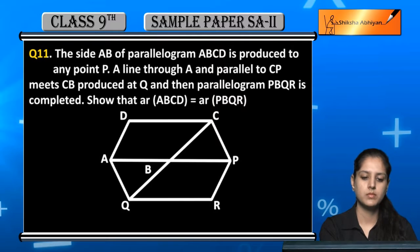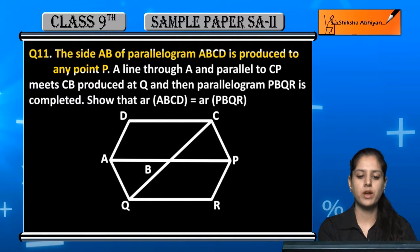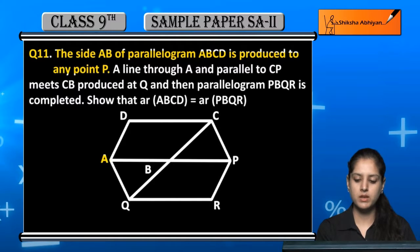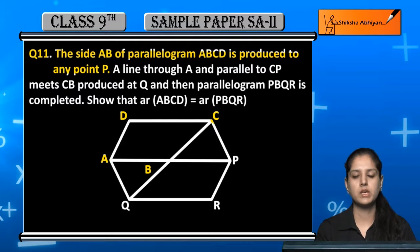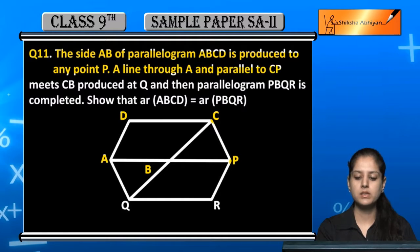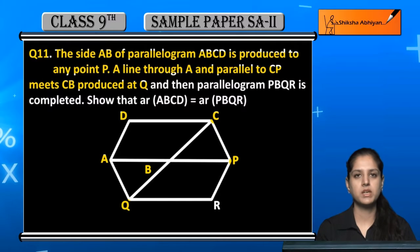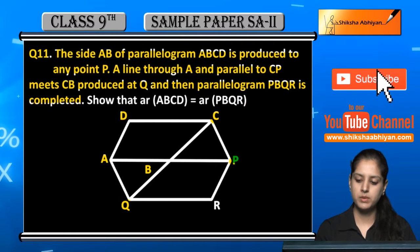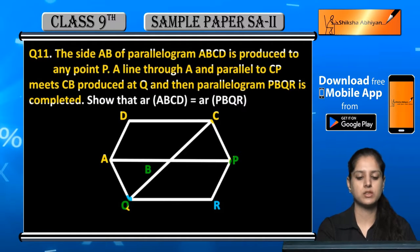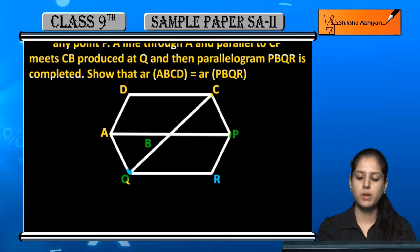Q11. The side AB of a parallelogram ABCD is produced to any point P. एक parallelogram है ABCD, उसकी side AB को P तक produce किया गया है. A से जाती हुई एक line जो CP के parallel है, वो CB produced को Q पर meet करती है. और इससे parallelogram PBQR complete हो जाता है. आपको show करना है कि parallelogram ABCD का area, parallelogram PBQR के equal है.